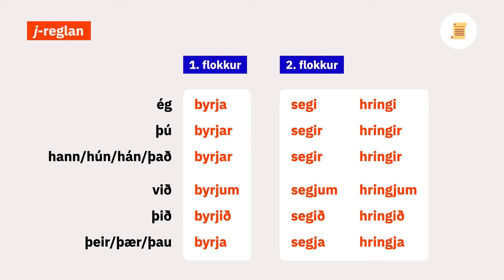In class 2 verbs, the jóð disappears before endings containing 'e'. In the plural, however, the jóð is kept when the ending starts with a different vowel.